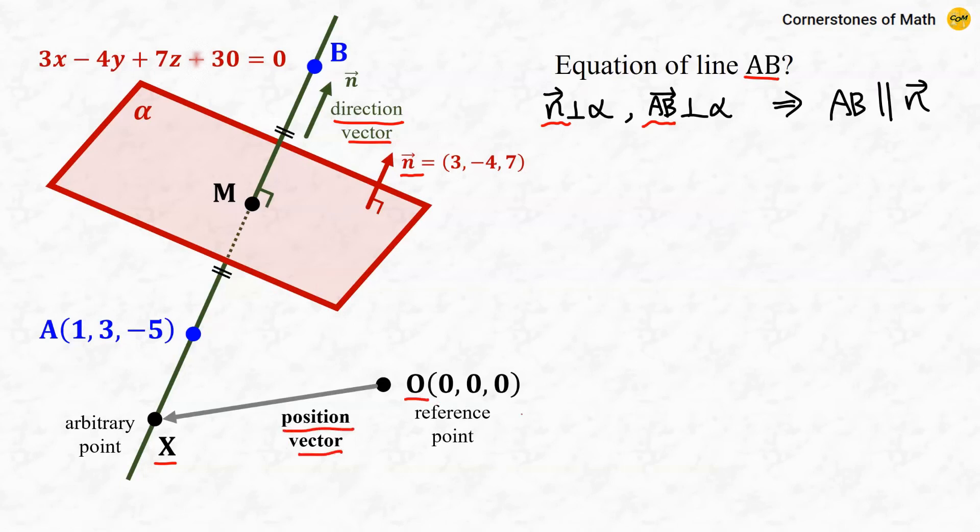We let X as an arbitrary point on line AB and think about the position vector OX, where this O is a reference point having coordinates (0, 0, 0). And this position vector OX can be obtained by vector OA plus vector AX. And since this vector AX is parallel to the direction vector of line AB and thus parallel to vector N,